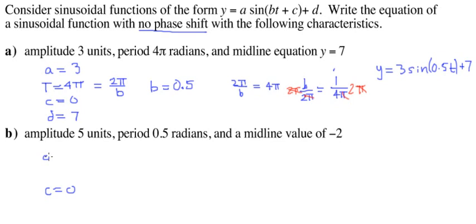Okay, amplitude of 5. Easy enough. Period is 0.5, so somebody did 2π divided by b to get the period and the result they got was 0.5.